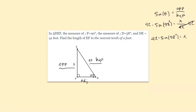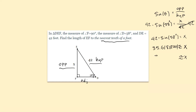Typing 42 times sine of 58 into the calculator gives x ≈ 35.61802004, which rounded to the nearest tenth is 35.6 feet. Those are your examples for finding missing sides using trig functions and ratios. If you have any questions, make sure you're going to office hours and asking your teacher for help. Have a good day.